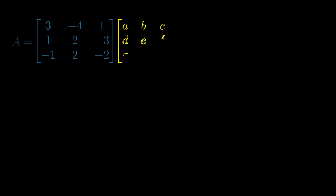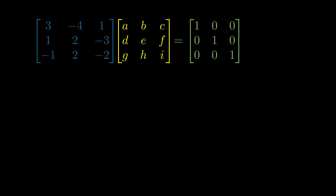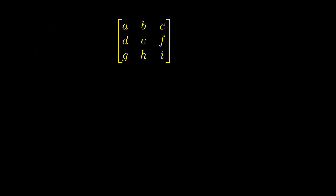Say we've got matrix A, which is some random matrix. We multiply matrix A by some other matrix with entries a, b, c, d, e, f, g, h, i, and this is going to equal the identity matrix. By definition, that unknown matrix is our inverse.